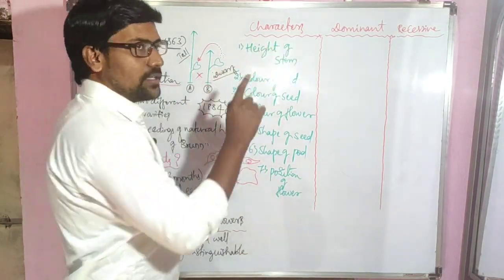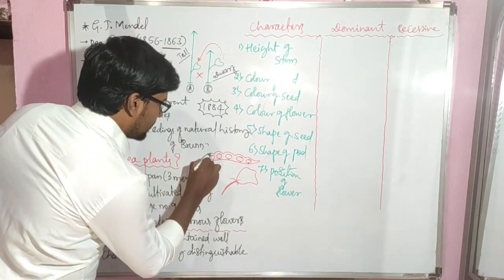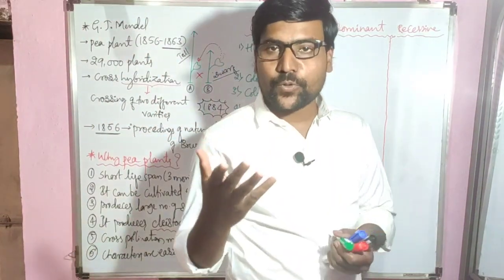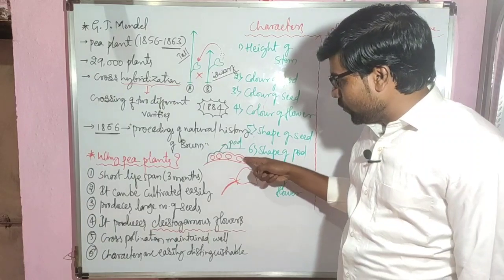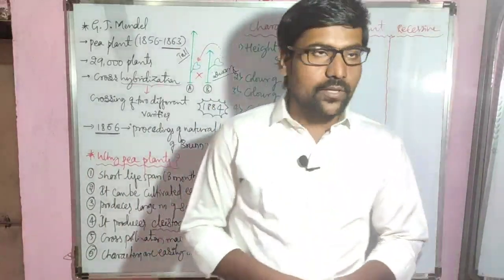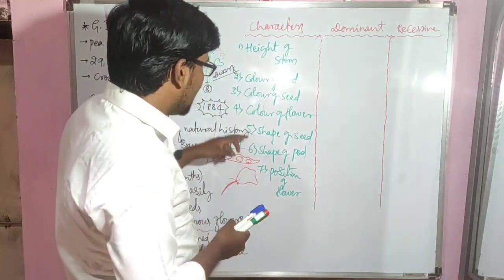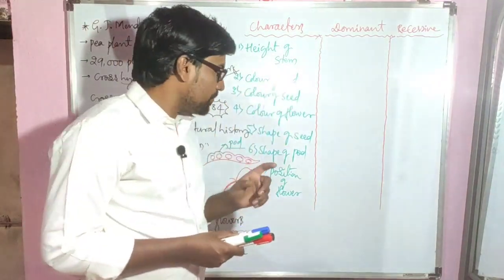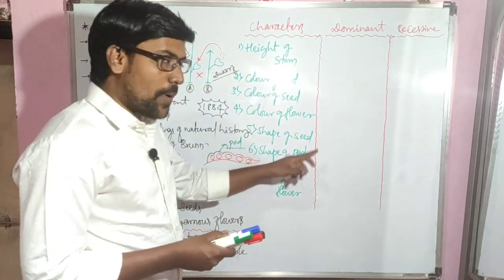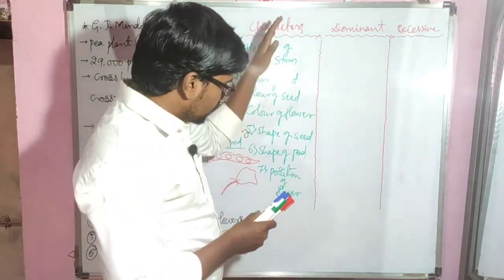So total seven characters. Stem height is one character. The pod — which is the pericarp or fruit, specifically a dry fruit — has a color. Inside the pod is the seed which also has a color. The flower has a color. Seeds have a shape. The pod has a shape. And flowers have a position on the plant. Total again seven characters.